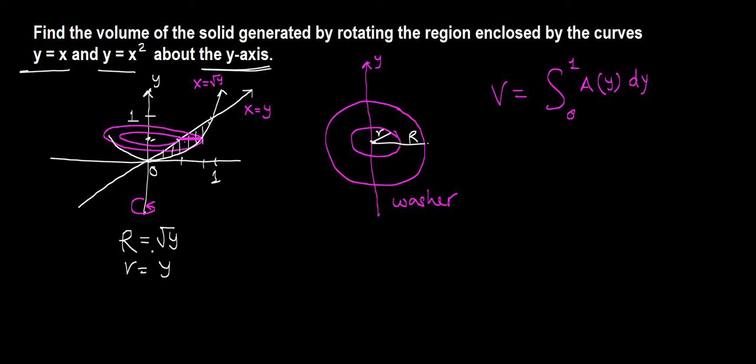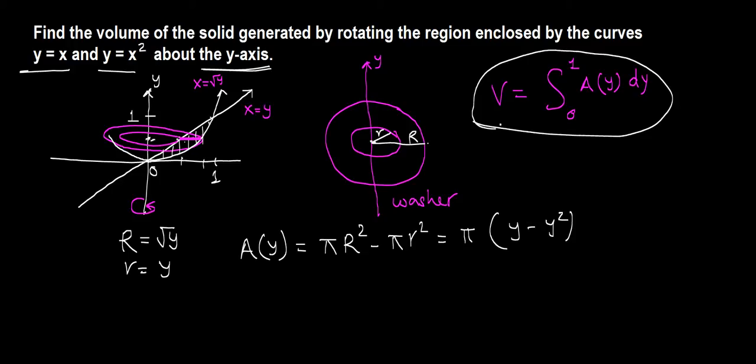Now since we have the outer radius and inner radius, the area of this washer in terms of y will be π R² that gives everything, minus subtract the inner π r². We can pull π out from these two terms: uppercase R squared is root y squared, just y, minus r squared is y squared. Now we use this formula and determine the volume.